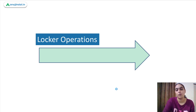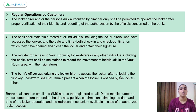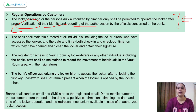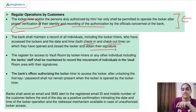The next set of directions relates to locker operations. The locker hirer or persons authorized by them shall be permitted to operate the locker only after proper verification of identity and recording of authorization. The bank shall maintain a record of all individuals who have accessed the locker, including date, time of check-in and check-out, and their signatures.